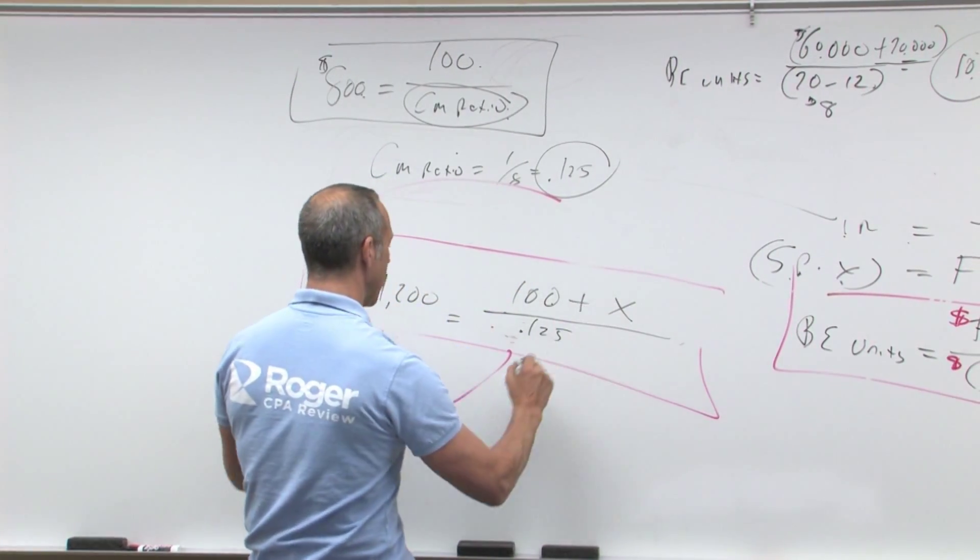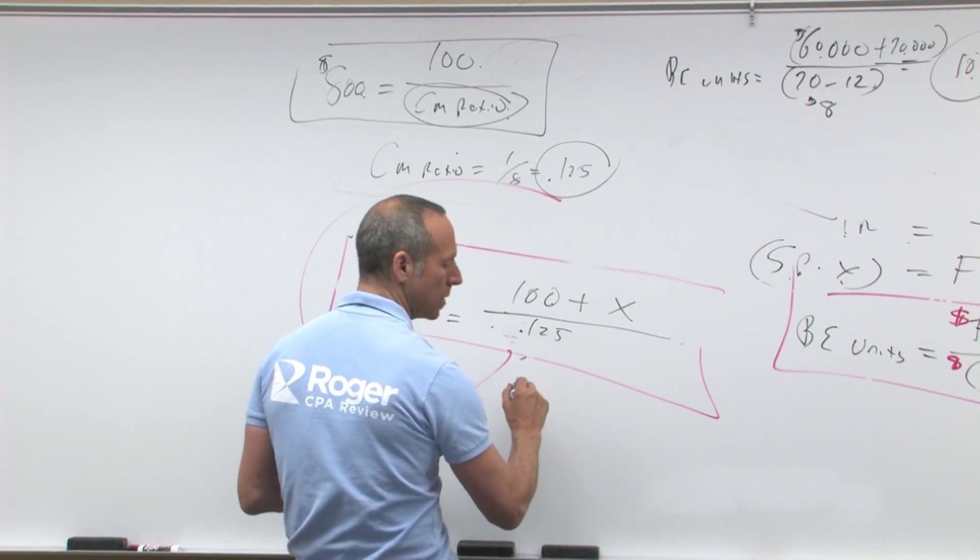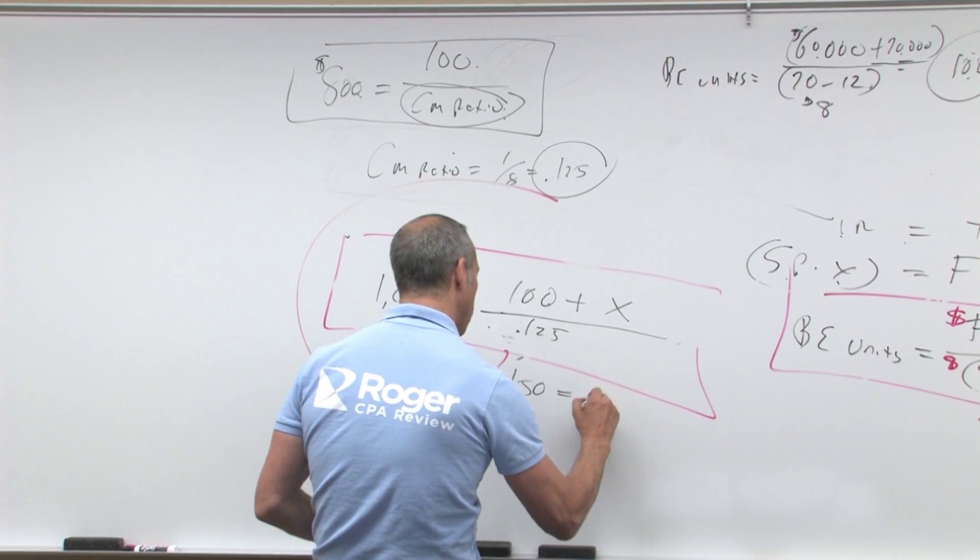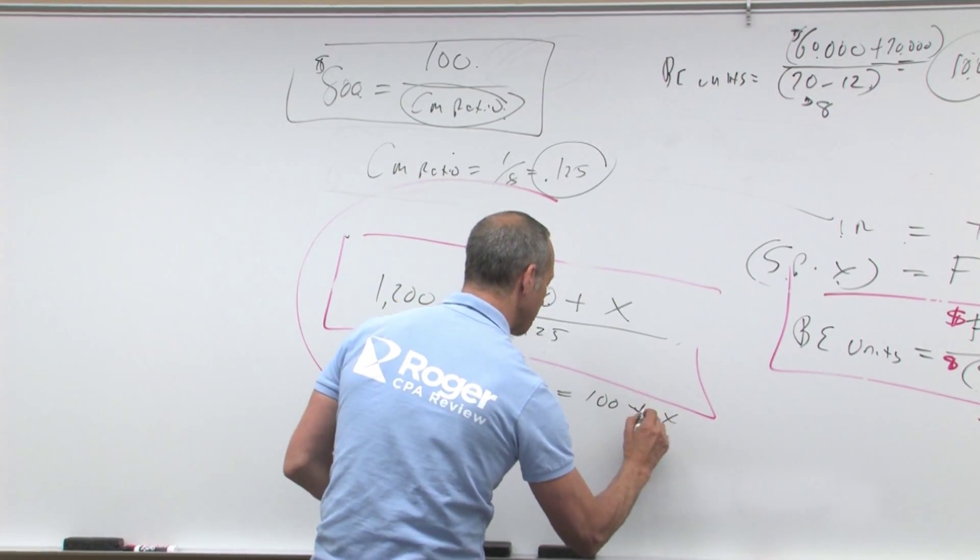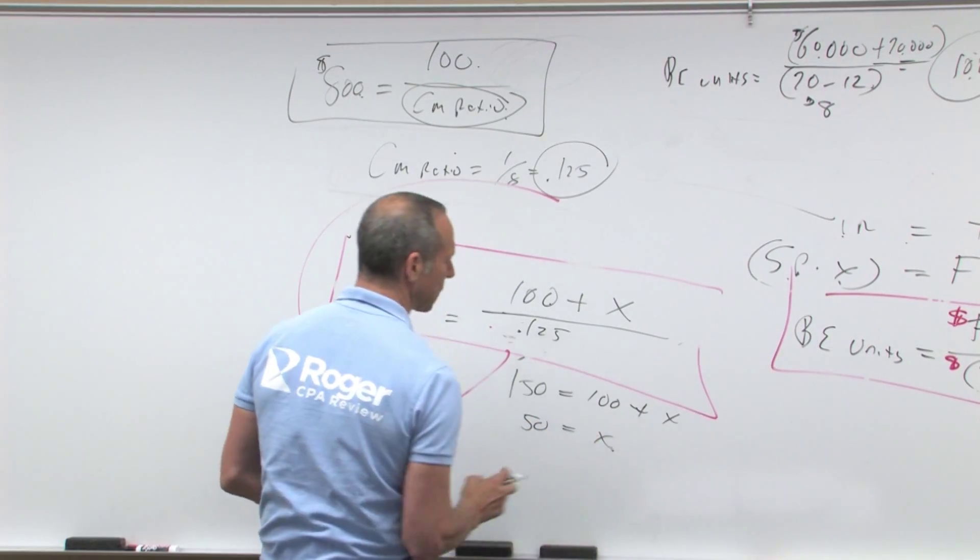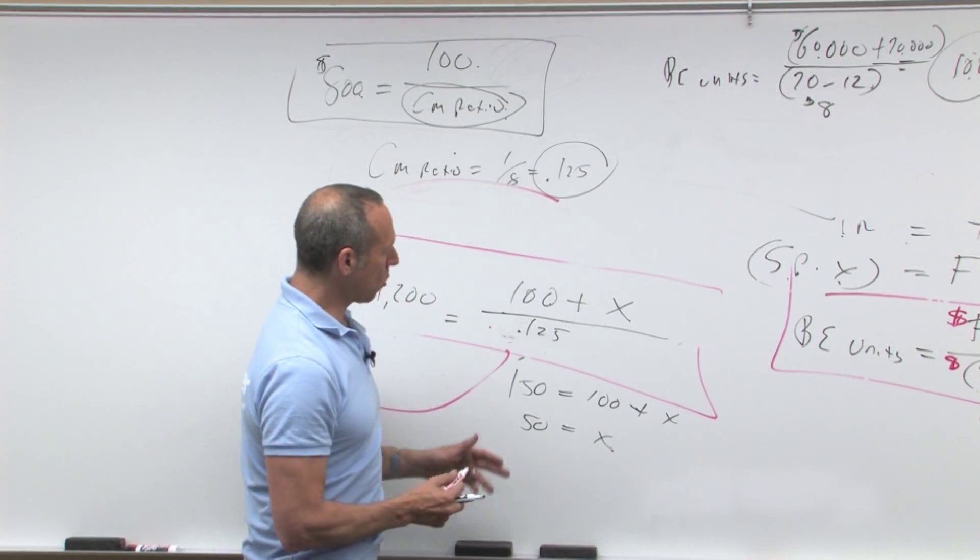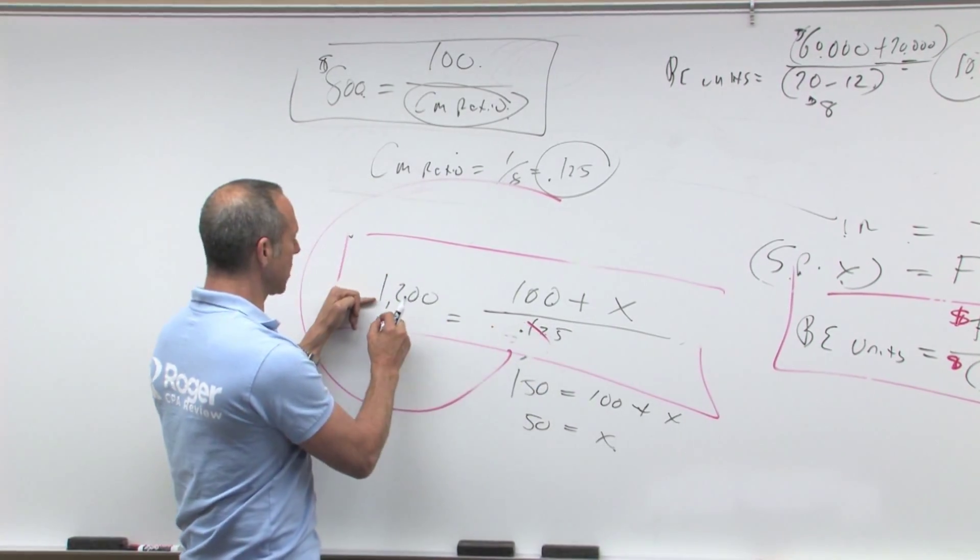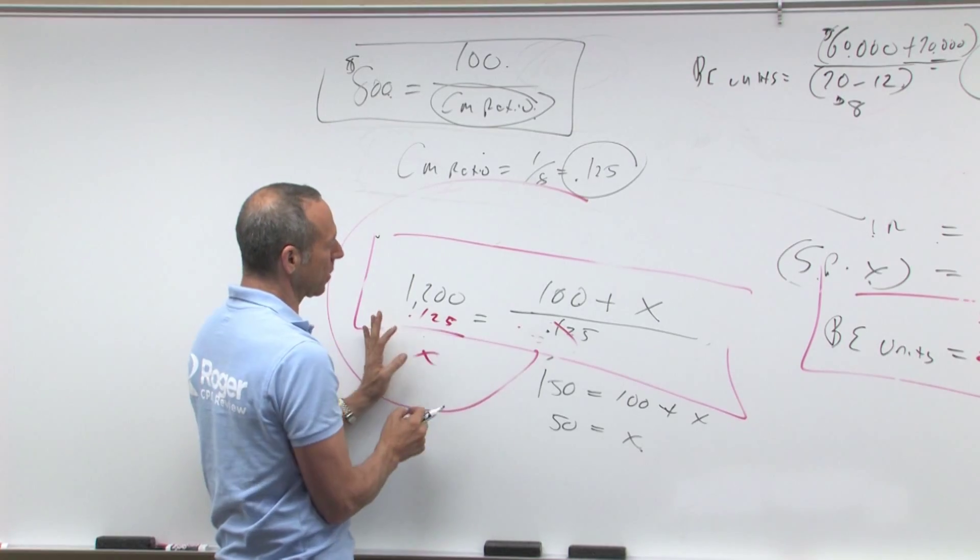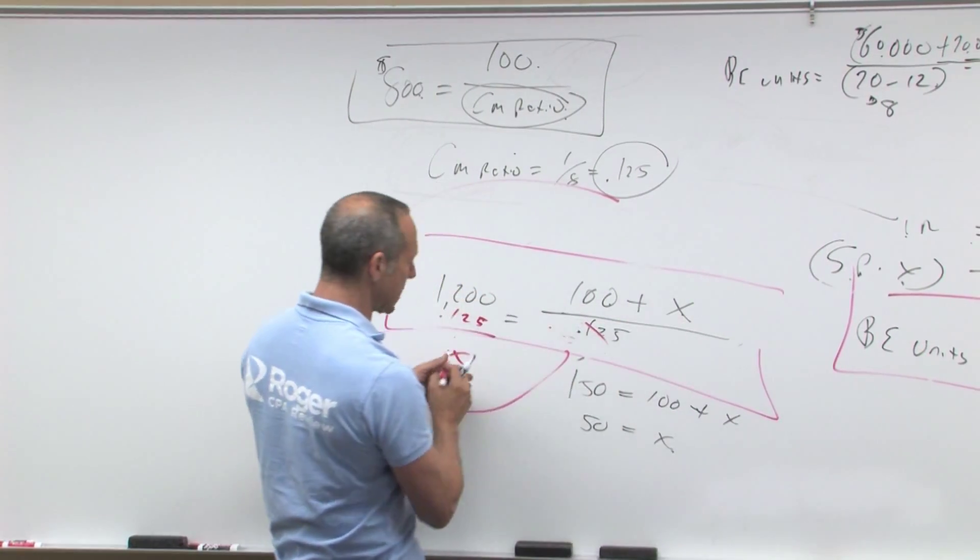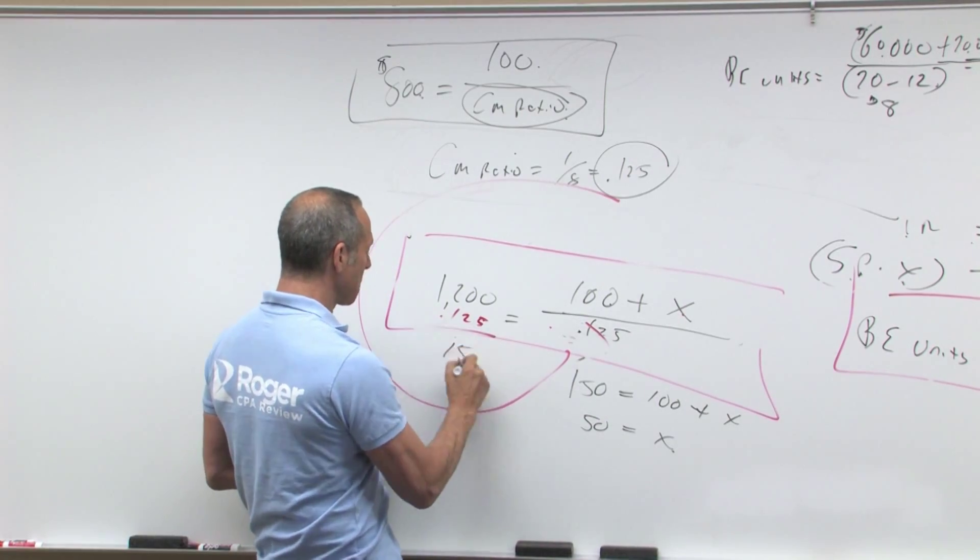Well, we're going to end up with, solving for X is, we end up with 150 equals 100 plus X, subtract that over, 50 equals X. So they're saying, what is the profit? Taking this, multiply each side times 0.125, multiply this times 0.125, which I don't have a calculator on me. That is going to equal 100 plus X, so I guess that must equal 150, there we go.